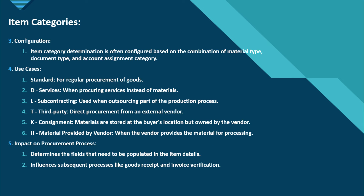The item category determination is often configured based on combinations of material type, document type, and account assignment categories. The use cases are: blank (standard) for regular procurement of goods, D for services when procuring services instead of materials, and L for subcontracting when outsourcing part of the production process.